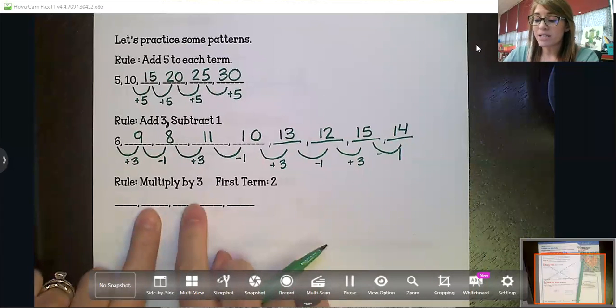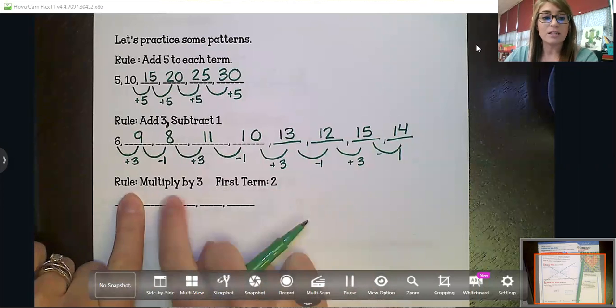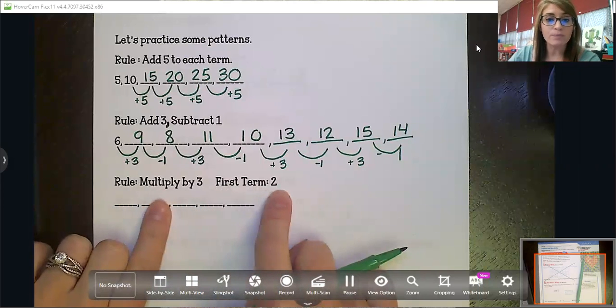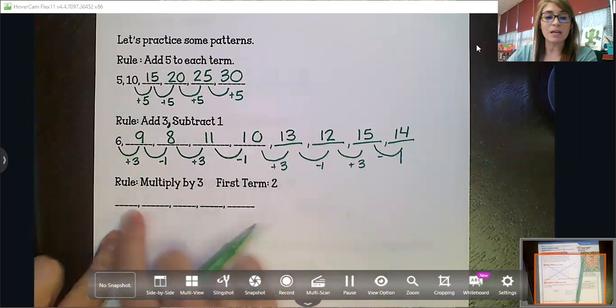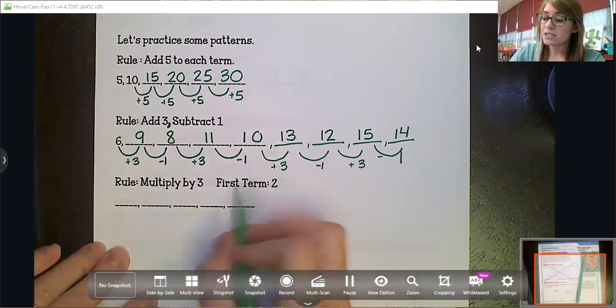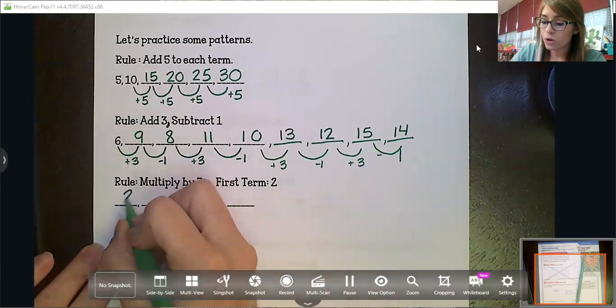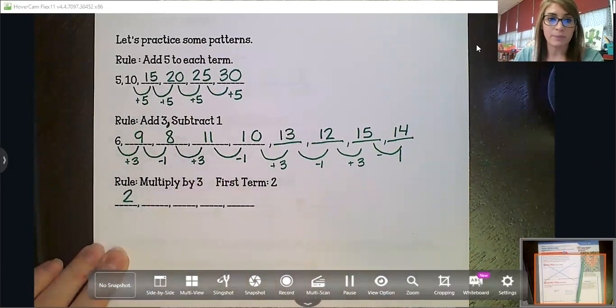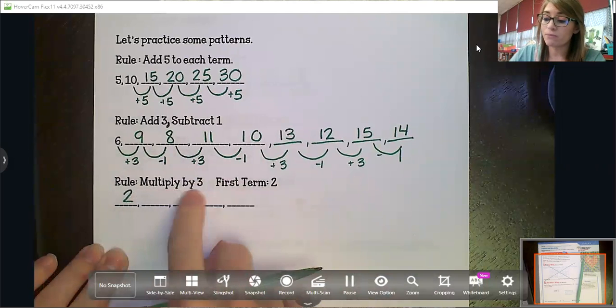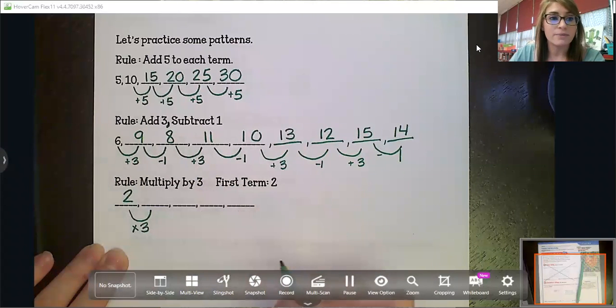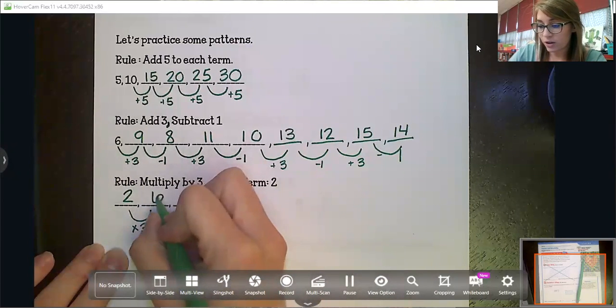And then sometimes they're going to give you the rule like this. They're going to tell you the rule is to multiply by three and your first term is going to be two. So sometimes they don't give it to you in the line already. They tell you what it needs to be. So I'm going to go ahead and put that two right there as my first term. And then I'm going to follow my rule, which is multiply by three. So two times three is six.